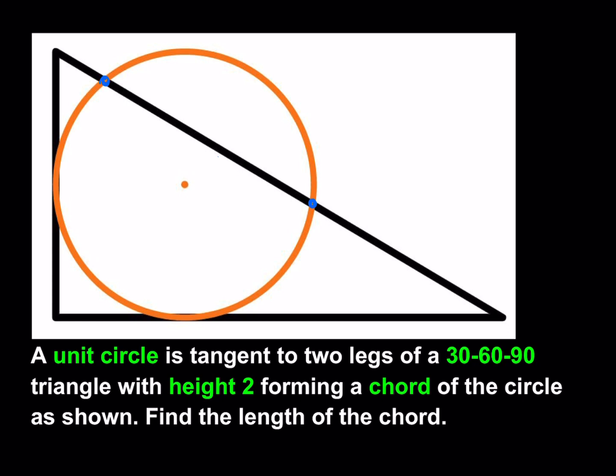This is a 30-60-90 triangle, so we're going to take advantage of that. This is a 90-degree angle here, this is a 30-degree angle here, and this is a 60-degree angle here. We're going to find the length of the chord using some properties of circles, but let's make some connections first.